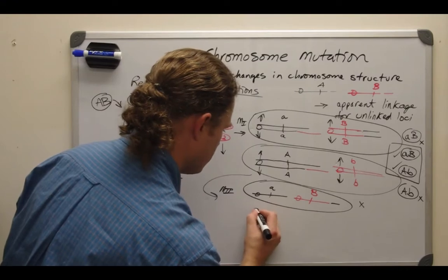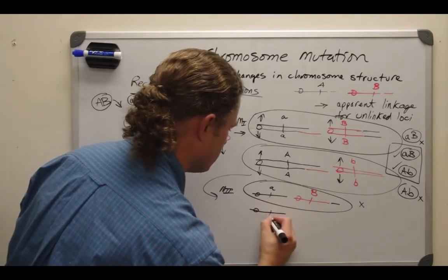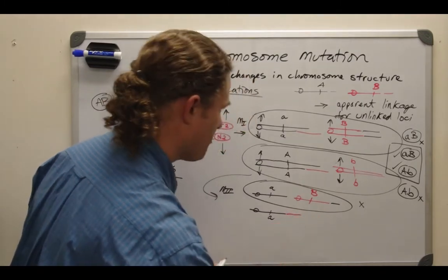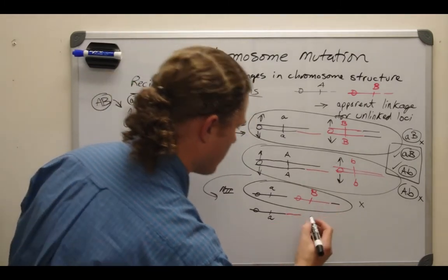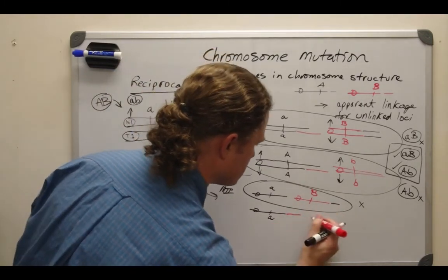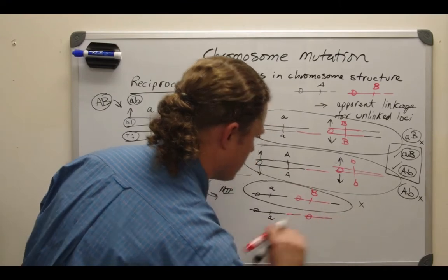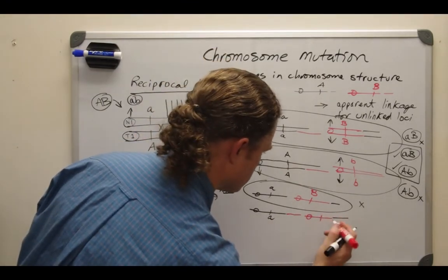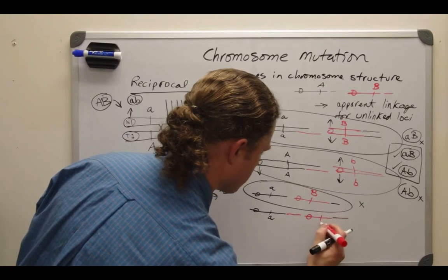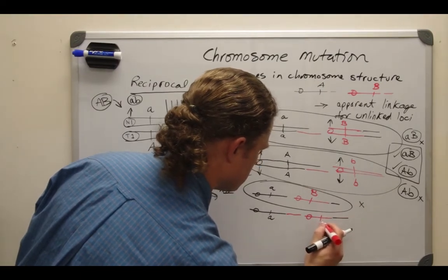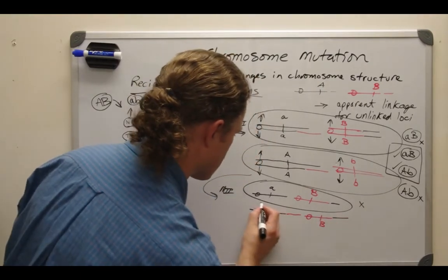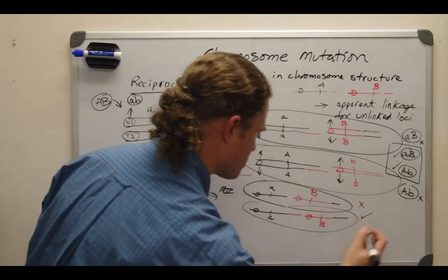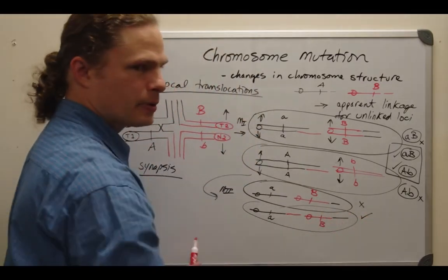The next one down has a little a allele on a translocated chromosome, paired up with a big B on a translocated chromosome. That is the second cell, and this one is functional because it has a proper haploid set.